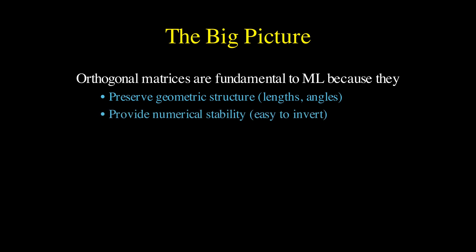They provide numerical stability because they're trivially easy to invert—you just transpose them. They enable stable gradient flow in deep networks, preventing the gradients from exploding or vanishing as they propagate through many layers.